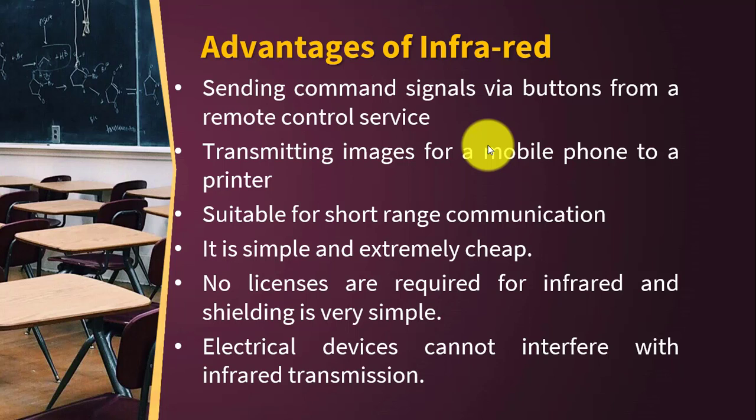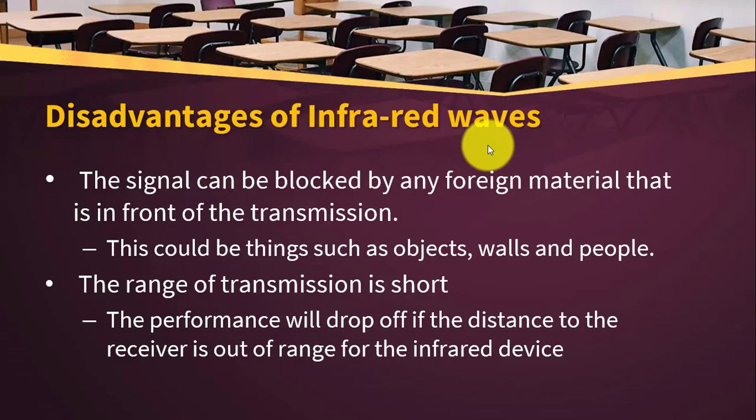Infrared is best suitable for short-range communication or communication within a building. It is simple and easy to install, cheap, and no licenses are required for its installation — you are not required to have a license from authorities to use infrared technology. Shielding is very simple. Importantly, electrical signals cannot distort your infrared signals. While sun rays do affect infrared signals, electrical signals do not distort them.